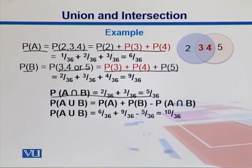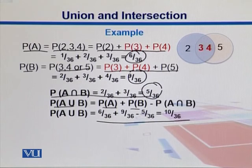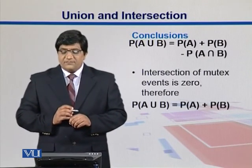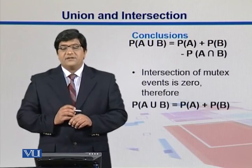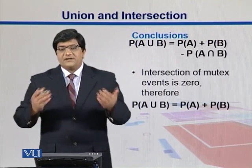When we take their union, we take their individual probabilities — 6/36 and 9/36 — and then subtract the intersection value of 5/36. So in total, the probability of their union is 10/36. You can simplify that if you want. In the end, a union is found by adding individual probabilities together and subtracting the intersection.